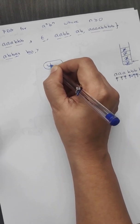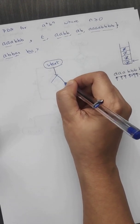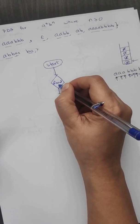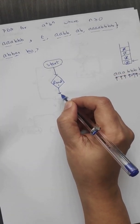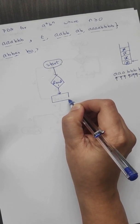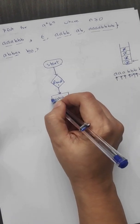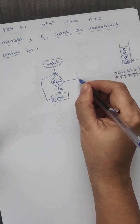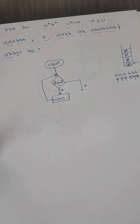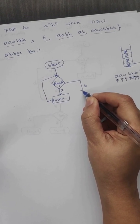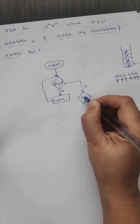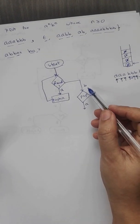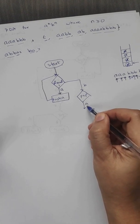Let us draw the PDA for this. We start with a read state. When we perform this read operation — call it read one — whatever number of a's we receive, we push all a's onto the stack and continue in the reading state. Now, when we receive a b during reading, that means we have started the b^n part of the string, so all a's have already been pushed onto the stack. We then pop the contents from the stack, expecting an a.